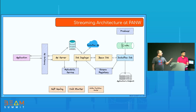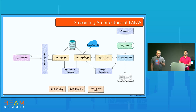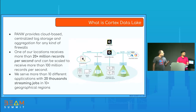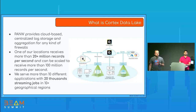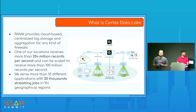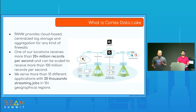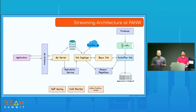After the Beam job is submitted, we used to submit to Dataflow. To give a sense of scale: we are processing more than 20 million records per second, and we are serving more than 10 regions. Currently, we have more than 20,000 streaming jobs running in production. All of them are unique, customer-driven jobs.